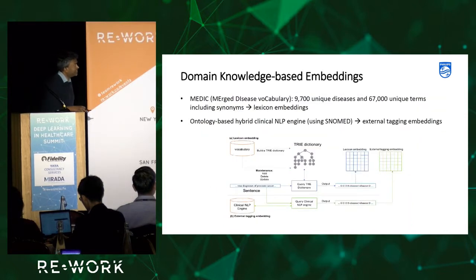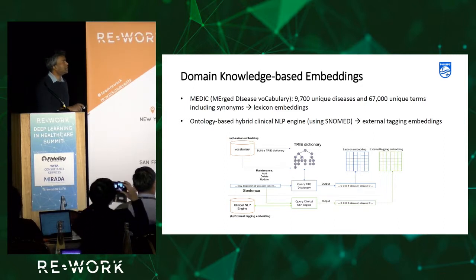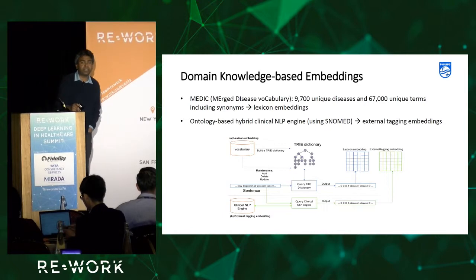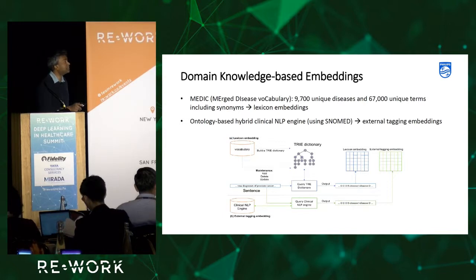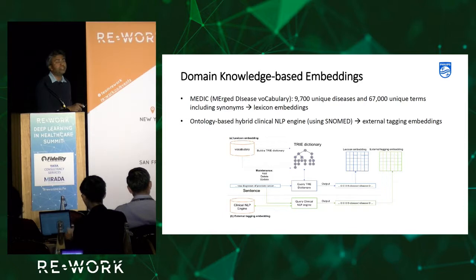For domain knowledge based embeddings, we use external knowledge induced into the model. We used two kinds of embeddings. For lexicon embeddings, we use the MEDIC ontology — Merged Disease Vocabulary — which combines OMIM and MESH ontologies. It has about 10,000 unique diseases and 67,000 unique terms including synonyms, which we leverage as lexicon embeddings.